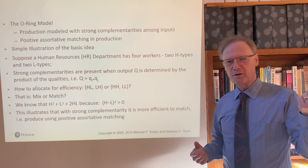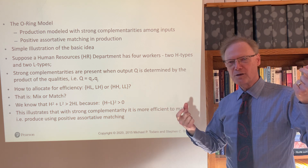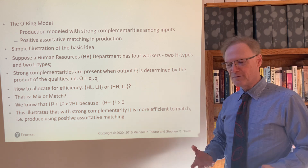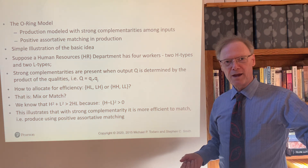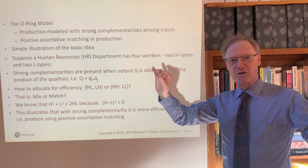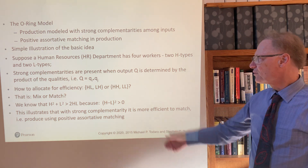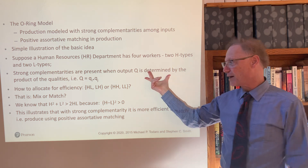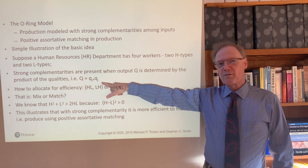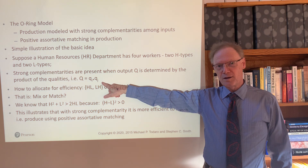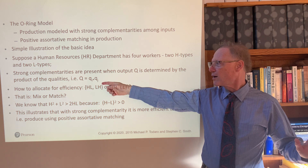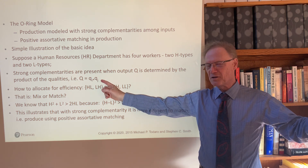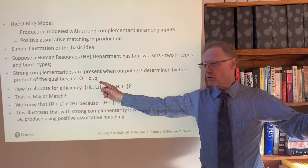For simplicity, we have two high-skilled workers — we call them H workers — and two low-skilled workers — we call them L workers. For maximum efficiency, do we want to mix and match? Do we want to have the two H workers together and the two L workers together? Or do we want an H and an L paired together in each department? The particular form of the production function here is the product of the quality of the inputs — you're multiplying the quality of one input times another, either H times H or H times L.